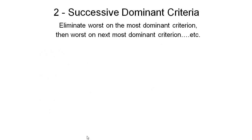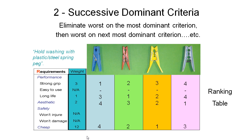The second method is the successive dominant criteria method. We take our most dominant criteria and eliminate the worst of our options based on it, then take the next most important criteria and eliminate the worst option until we're left with only one. Taking this example with a ranking table, we look at the most dominant criterion which is weight and eliminate the lowest ranked one — the blue peg — because it's unlikely to come out as the best option.